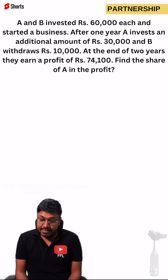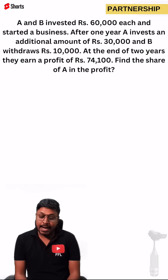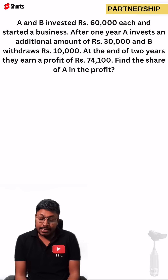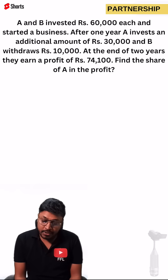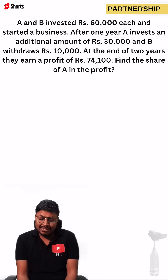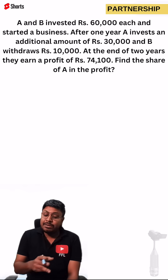A and B invested rupees 60,000 each and started a business. After one year, A invested an additional amount of 30,000 and B withdraws rupees 10,000. At the end of two years they earn a profit of 74,100. Find the share of A in the profit. There are two persons in a business and both are investing the same amount.